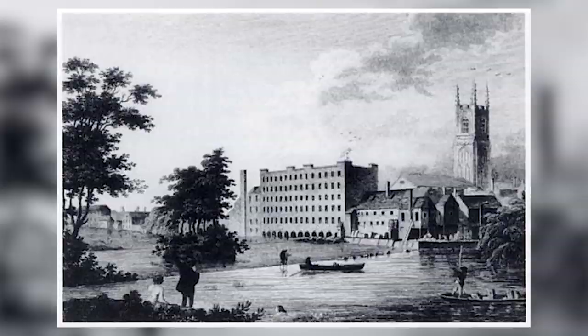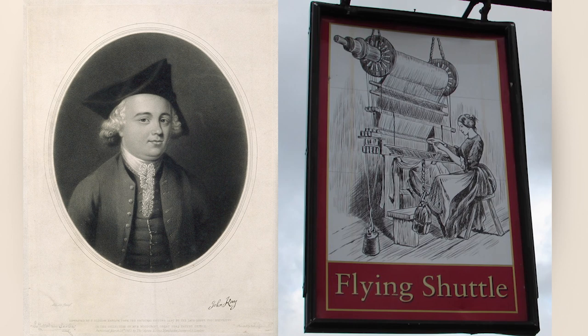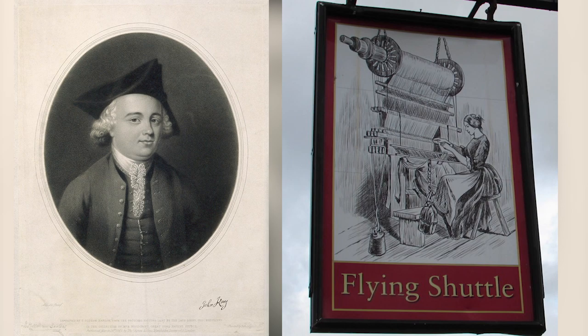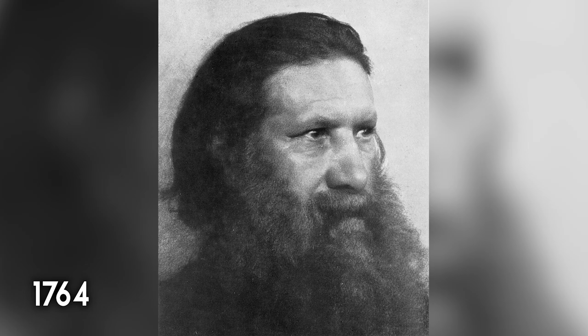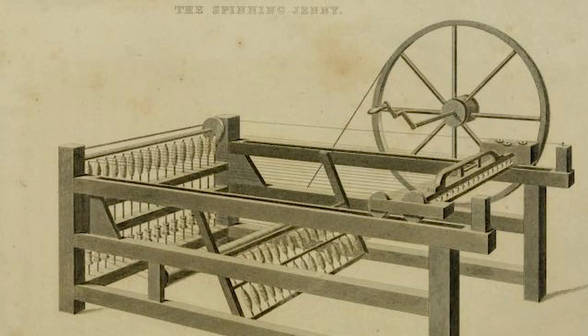1733, John Kay invented and patented the Flying Shuttle, a simple weaving machine which allowed one weaver to weave wider fabrics, cutting labor force by half. 1764, James Hargreaves invented the spinning jenny — jenny being a variant of the word engine — a machine which made cloth making faster and easier as one worker could spin eight spindles altogether.